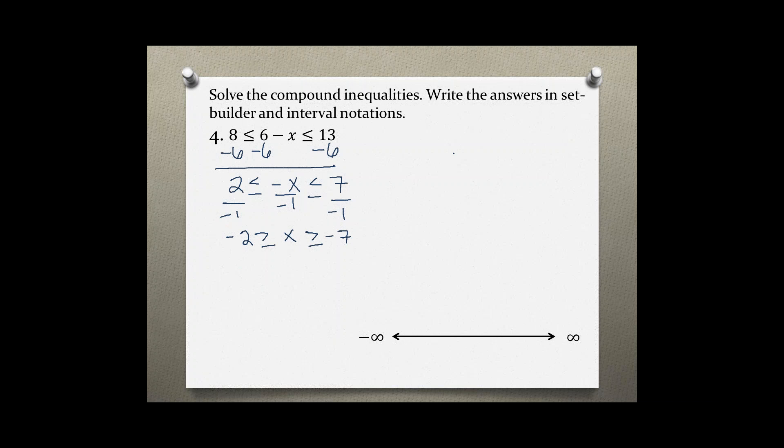But we want to write our inequality from least to greatest, so we're going to write negative 7 is less than or equal to x, which is less than or equal to negative 2.